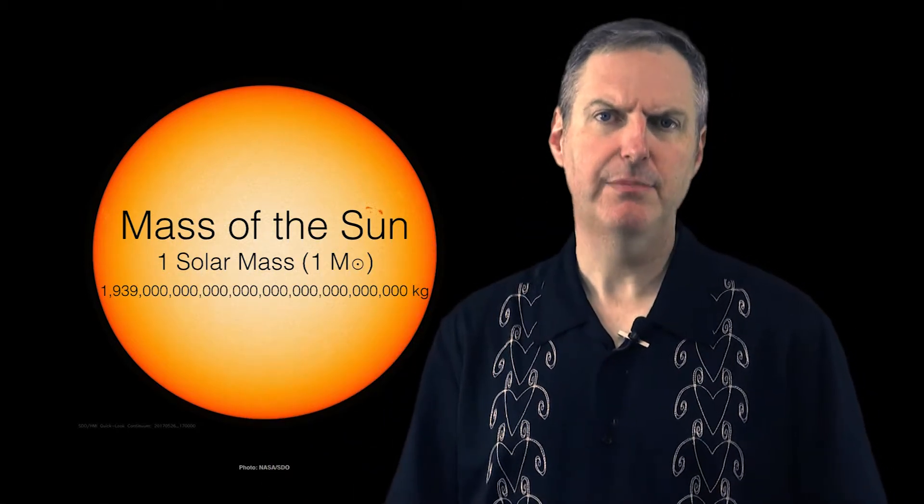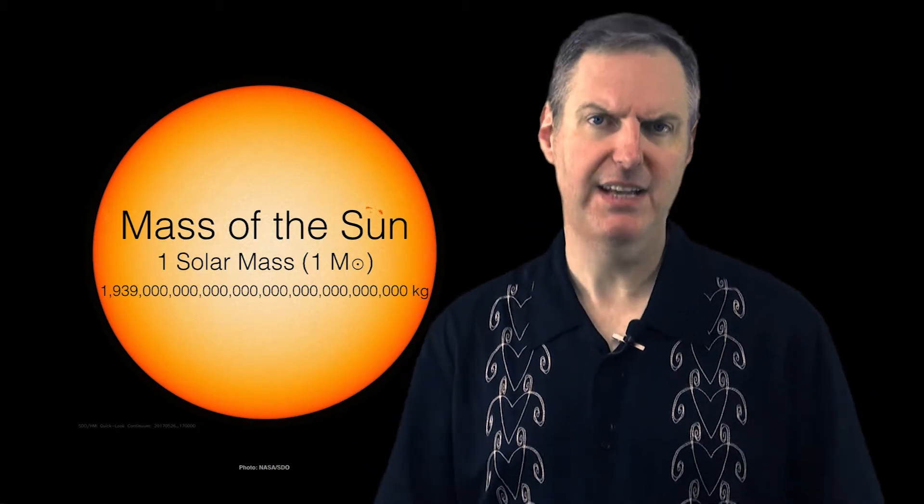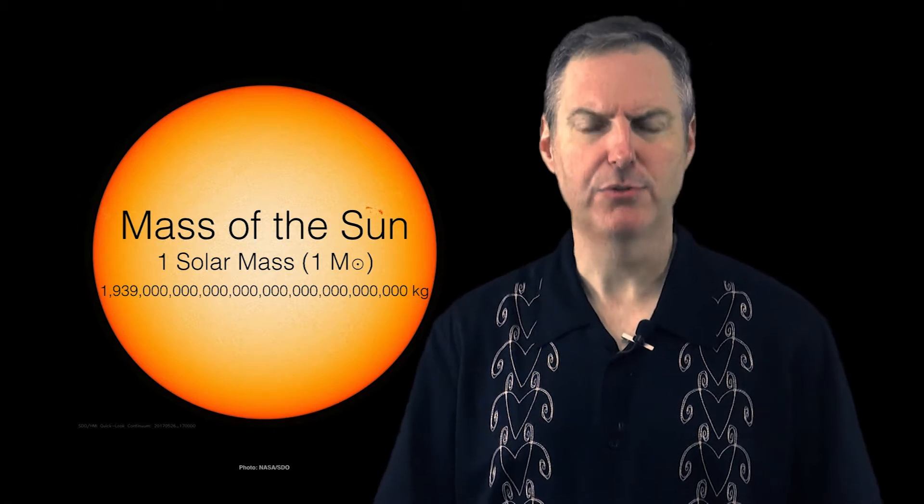Well, in any case, that's a lot of zeros to have to write out. And moreover, if I make a mistake and misplace just one of those zeros, well then I've changed the value of the mass of the sun by a whole factor of ten, and that is a major problem.